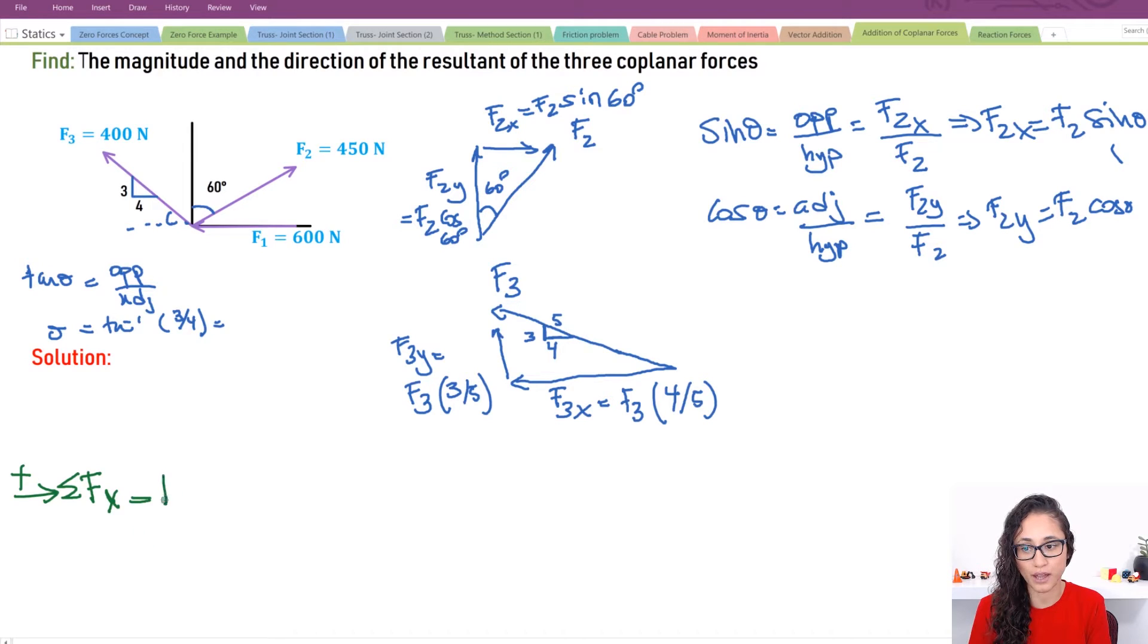This is equals to Fx. I have Fx is equal to, I have minus F3x because it's going the opposite direction. I have minus F3 times 4 over 5. Then I have minus F1 because it's also going to the opposite direction, which is 600 newtons. Let's just substitute this one F3 400 so that we save time. So that's 400.